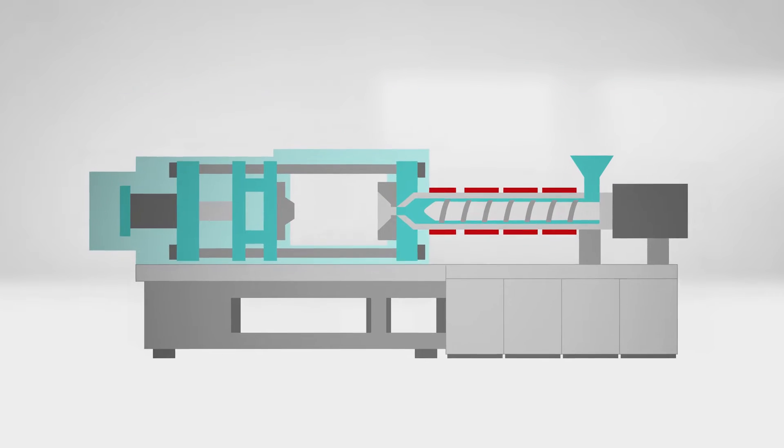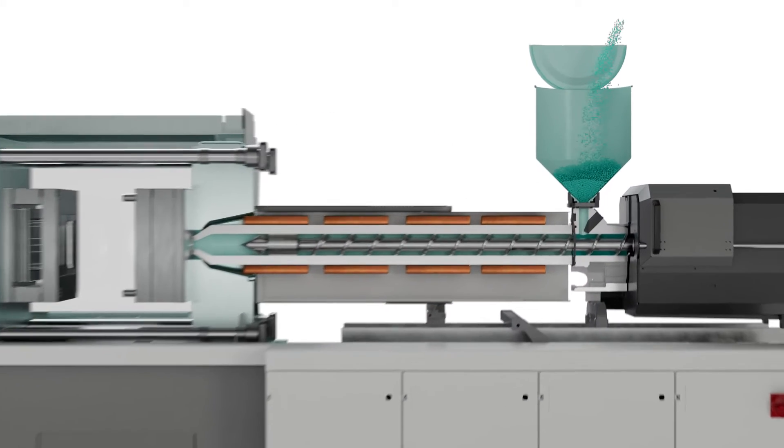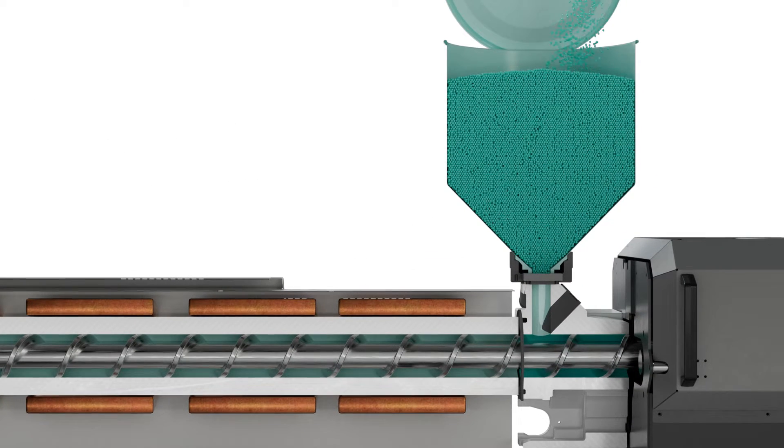Production of the spirit level starts in the injection unit. The plastic granulate is automatically fed into a hopper and then transferred to the barrel of the extruder screw.